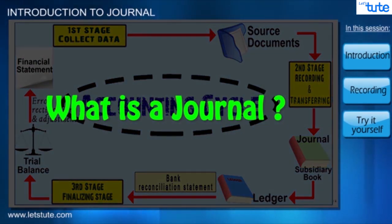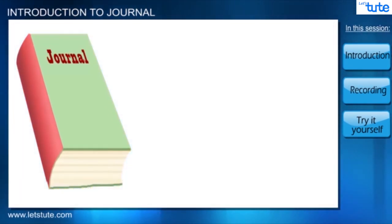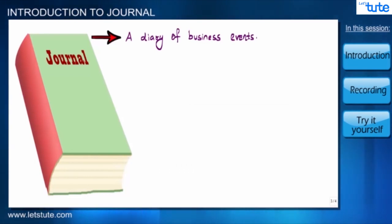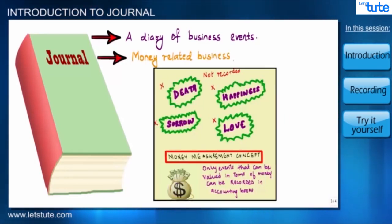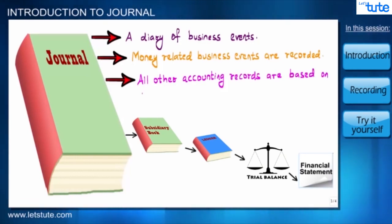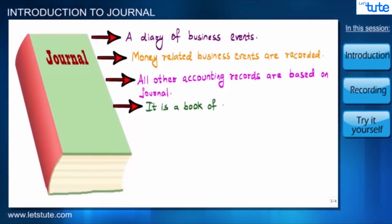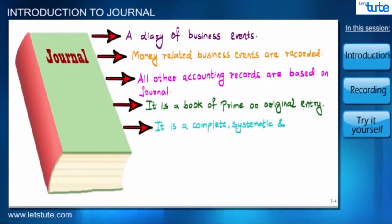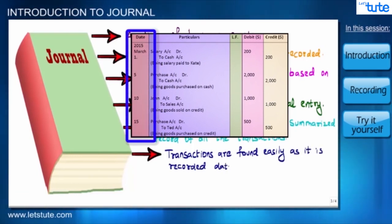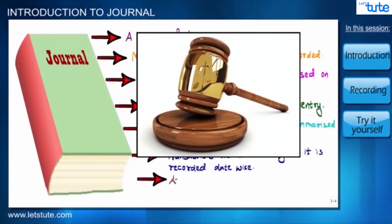So friends, can you tell me what is a journal? A journal is nothing but a diary of business events. According to the money measurement concept, only those business events which can be valued in terms of money are recorded. The journal is the most basic record on which all other accounting records are dependent. It is a book of prime or original entry. A journal is a complete, systematic, and summarized record of all transactions. All daily transactions are found quickly in this book as it is always chronologically arranged.